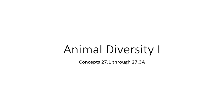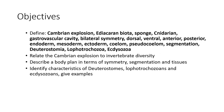Let's look at the early animals. For this lecture, be able to define: Cambrian explosion, Ediacaran biota, sponge, cnidarian, gastrovascular cavity, bilateral symmetry, dorsal, ventral, anterior, and posterior, endoderm, mesoderm, ectoderm, coelum, pseudocoelum, segmentation, deuterostomia, Lophotrochozoa, and Ecdysozoa.